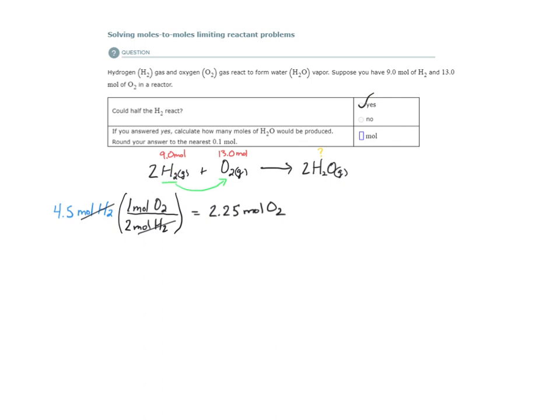Now clearly, H2 is our limiting reactant. So this is our limiting reactant. And oxygen is our excess reactant. So they're asking us to tell them how much water can we make if half of the H2 reacts. So let's do that.